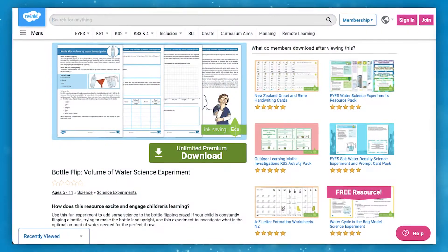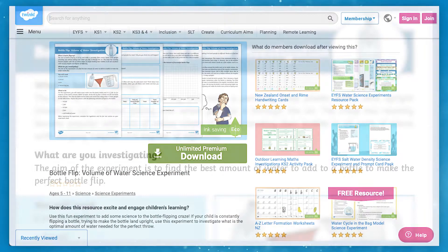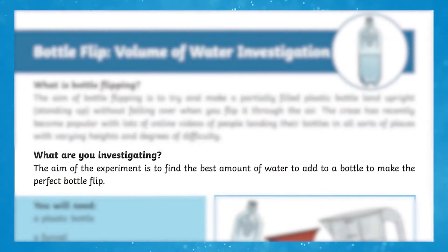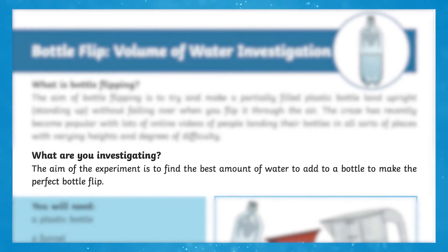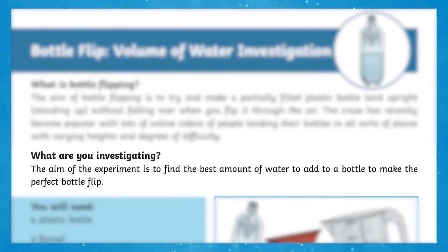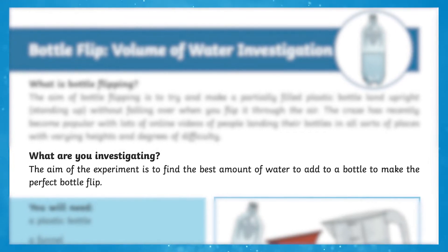That took me about eight tries to get that. Bottle flip volume of water science experiment. The aim of this experiment is to find the best amount of water to add to a bottle to make it the perfect bottle flip.